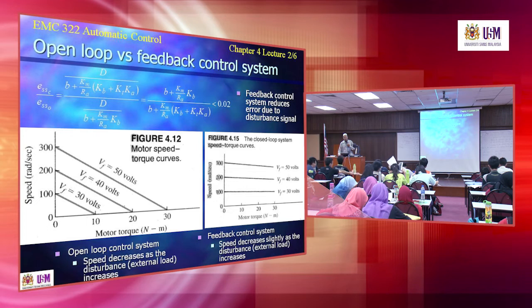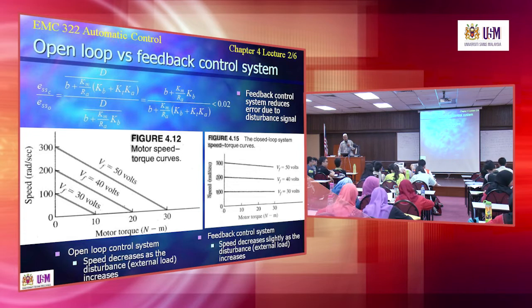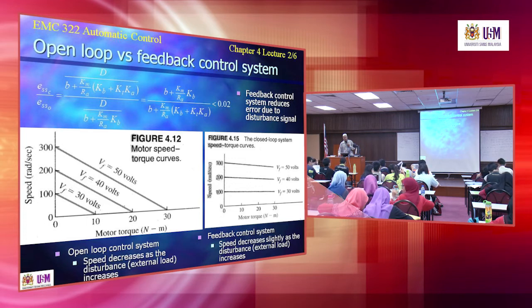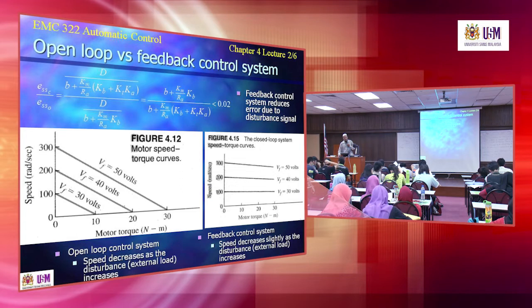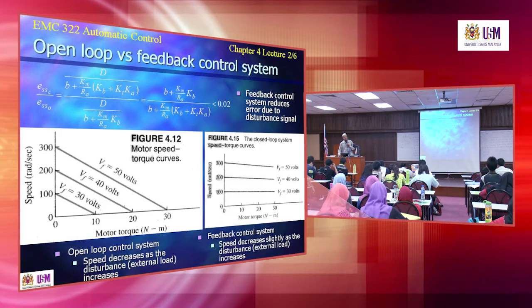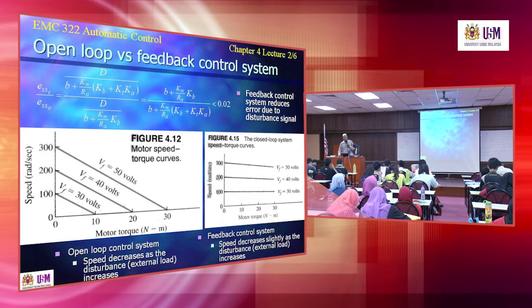Looking at these two equations, there are similarities: both have D in the numerator and B in the denominator. The open loop has KM·KB/RA in the denominator, which also exists in the closed loop. However, the closed loop system has an additional term: KM·KT·KA/RA in the denominator, which does not appear in the open loop system.